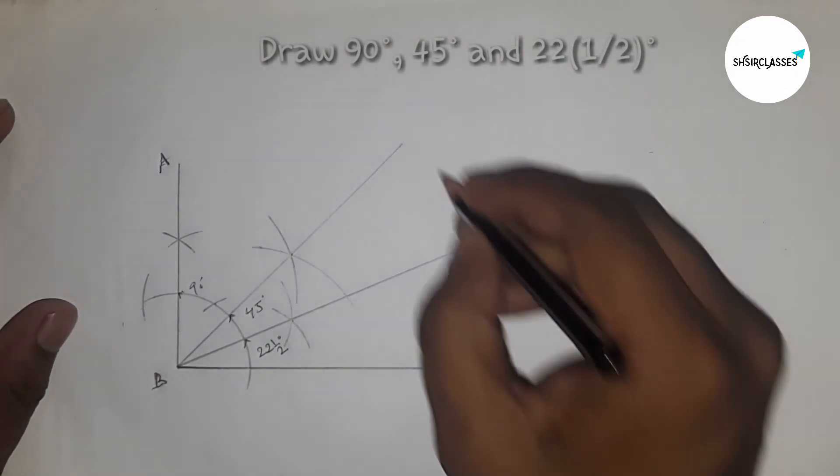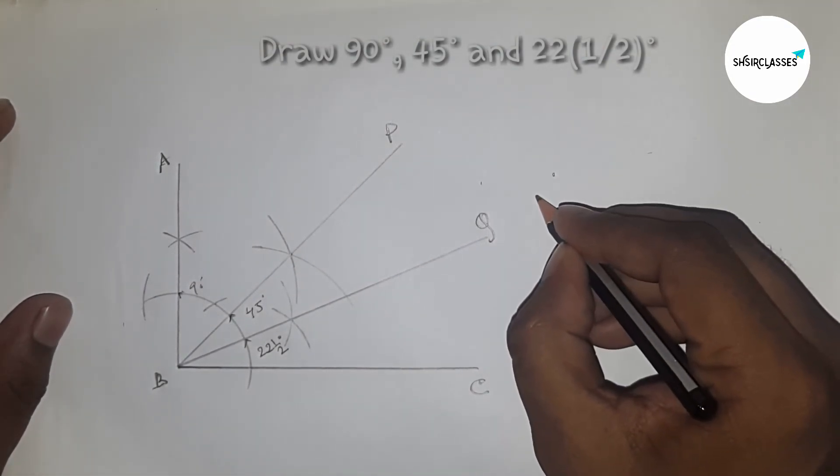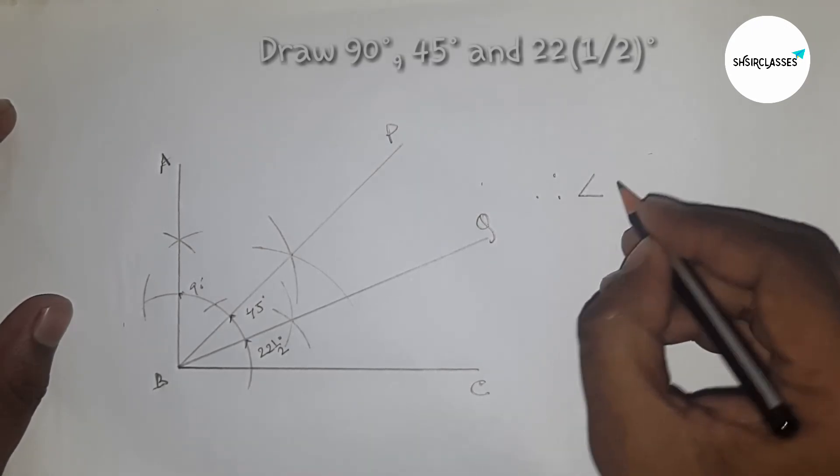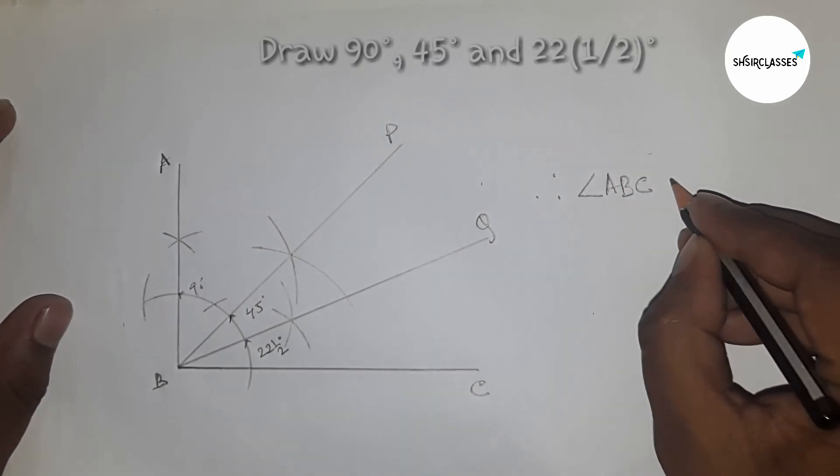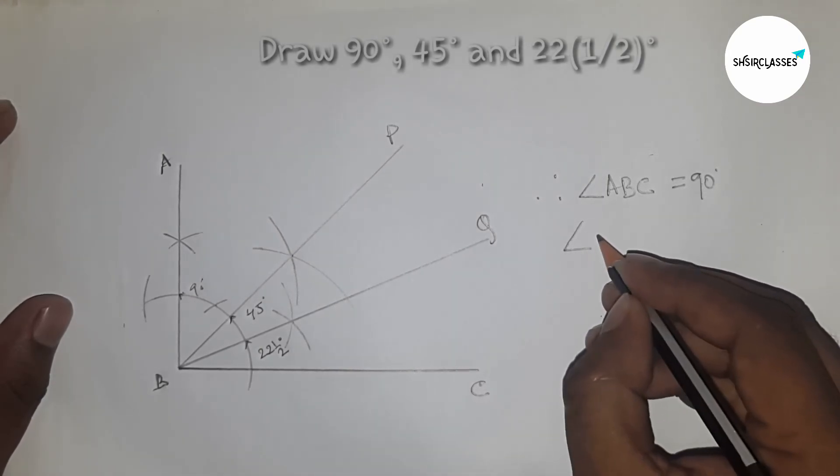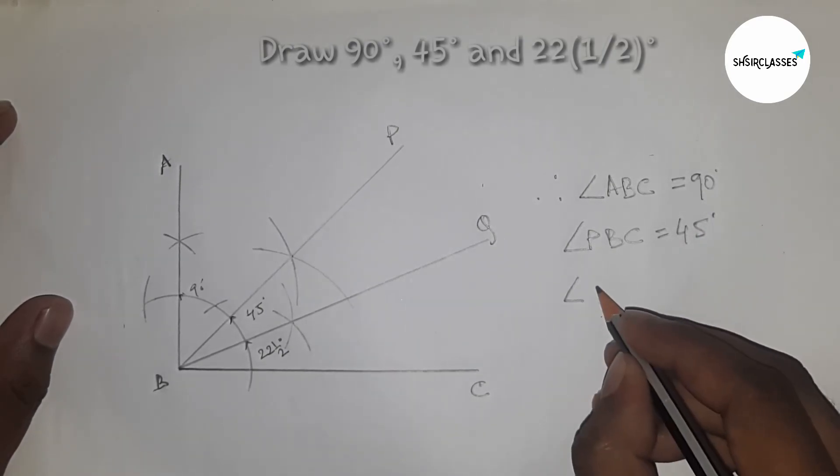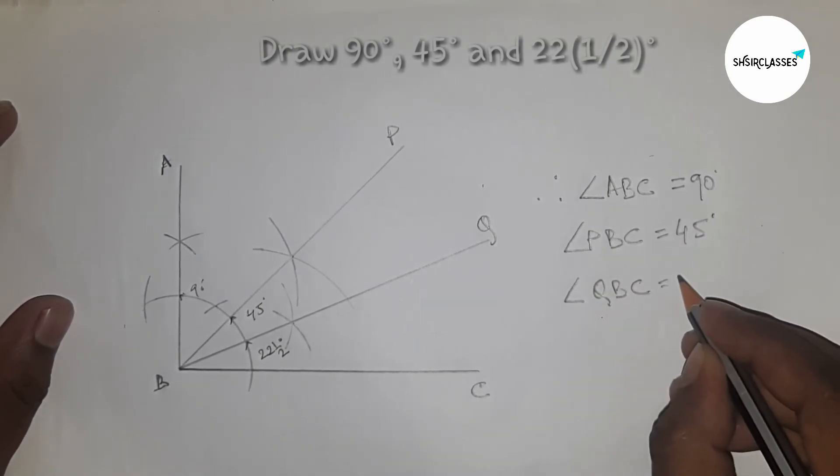I'm labeling these angles as ABC, PBC, and QBC. Therefore angle ABC equals 90 degrees, angle PBC equals 45 degrees, and angle QBC equals 22.5 degrees.